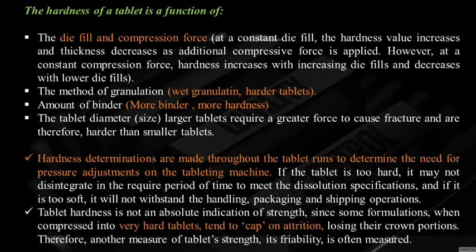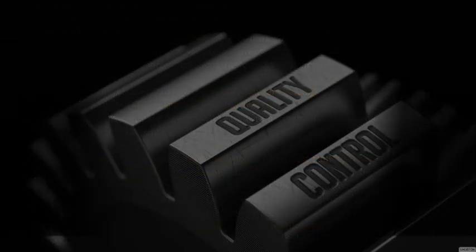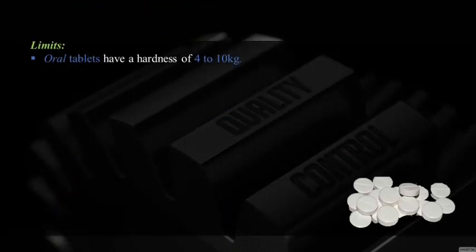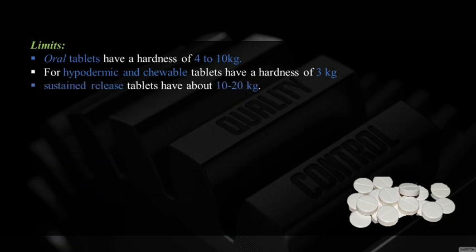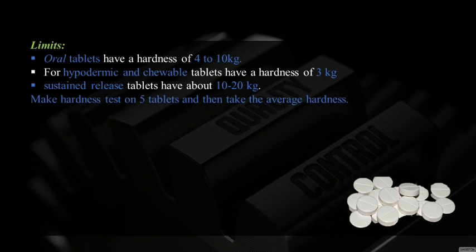Tablet hardness is not an absolute indication of strength, since some formulations when compressed into very hard tablets tend to cap on attrition, losing their crown portions. Therefore, another measure of tablet strength is friability. Hardness limits: oral tablets have a hardness of 4 to 10 kg; hypodermic and chewable tablets have a hardness of 3 kg; sustained release tablets have a hardness of 10 to 20 kg. The hardness test is made on 5 tablets and the average is taken.